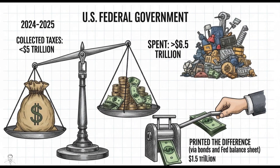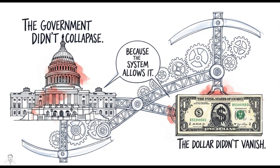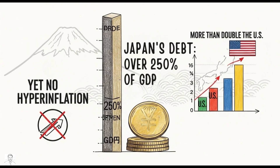Let's make this real with updated examples. The US federal government in 2024–2025 collected around 5 trillion dollars in taxes, spent over 6.5 trillion dollars, and printed the difference via bonds and the Fed balance sheet. And guess what — the government didn't collapse, the dollar didn't vanish, because the system allows it.